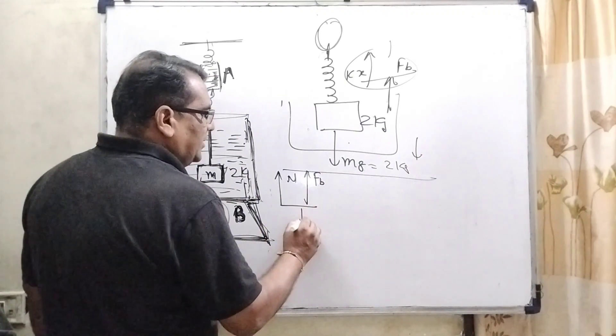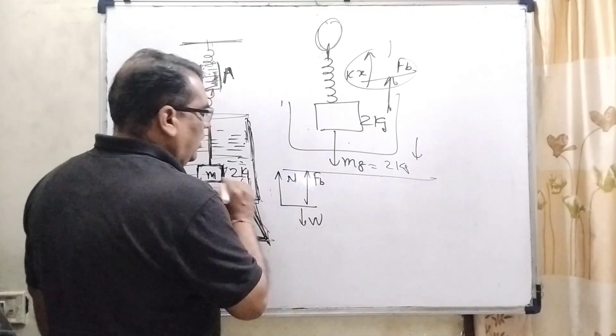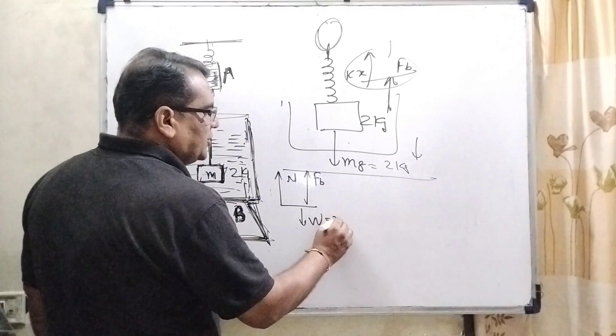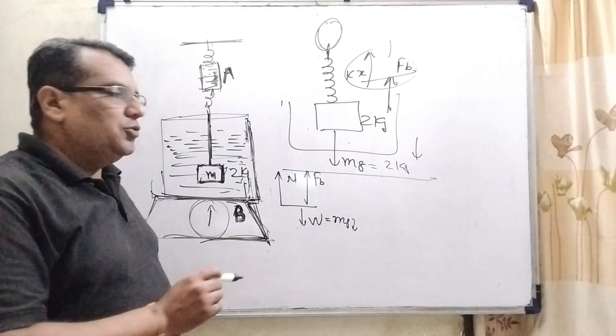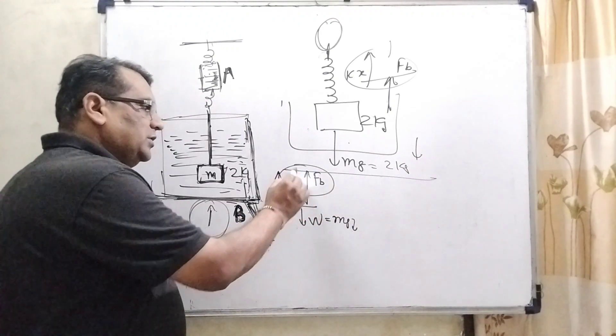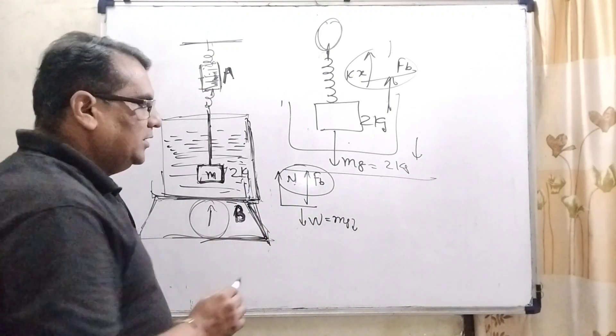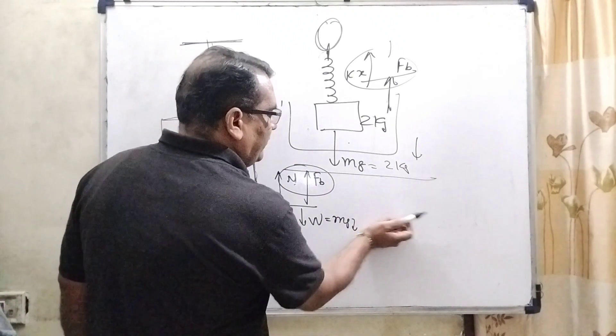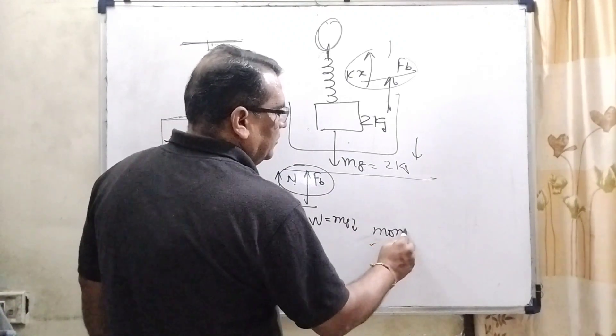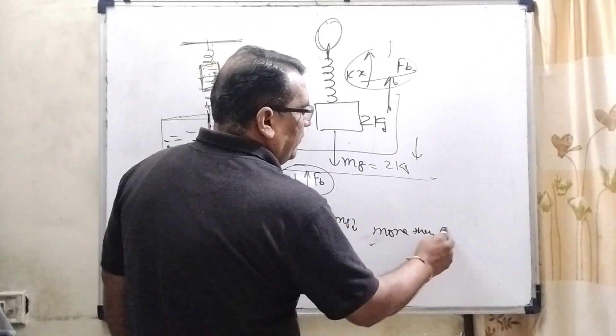Buoyant force at upward direction. And only weight of this block that is at downward direction. So, as we know that the pan balance shows always normal force. Here normal force increases. So, it means this reading shows more than 5 kg.